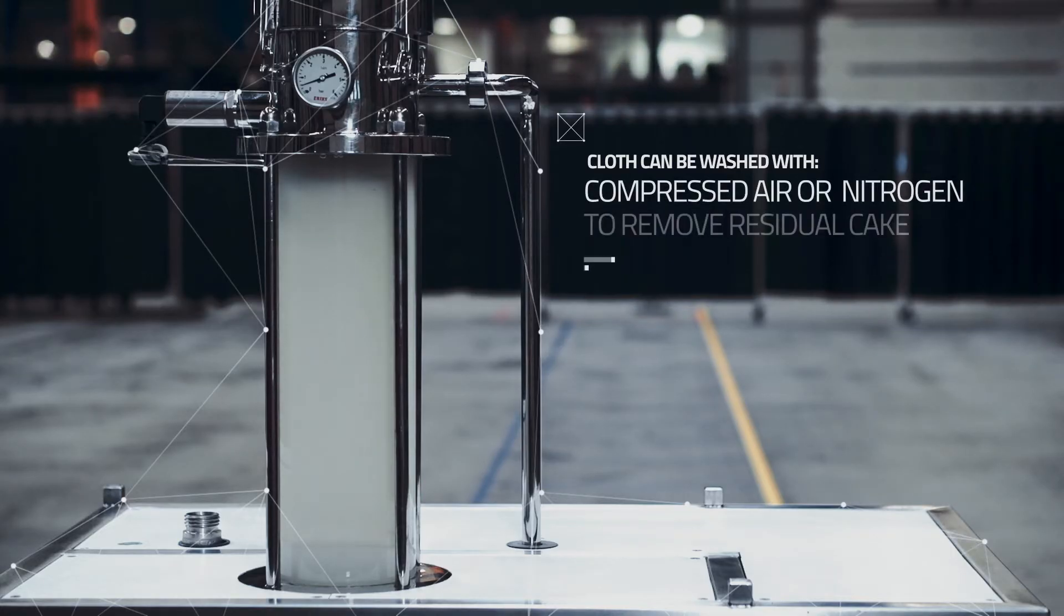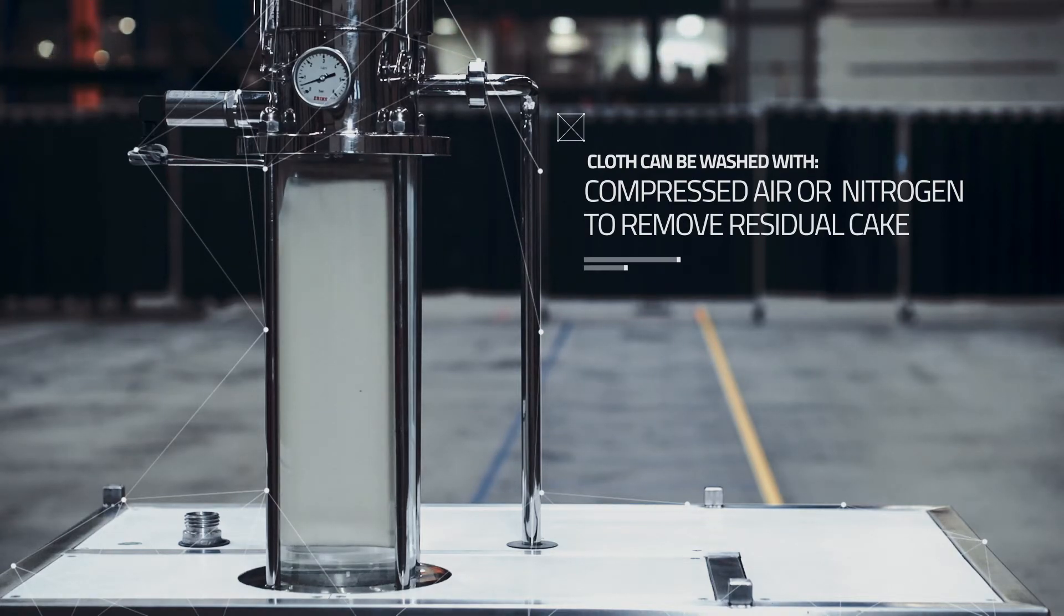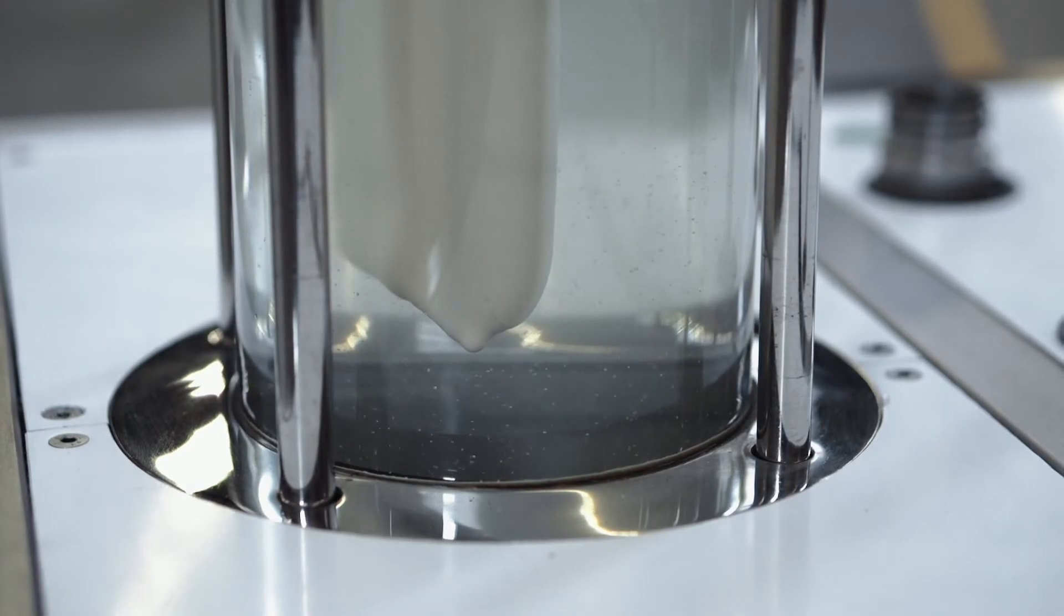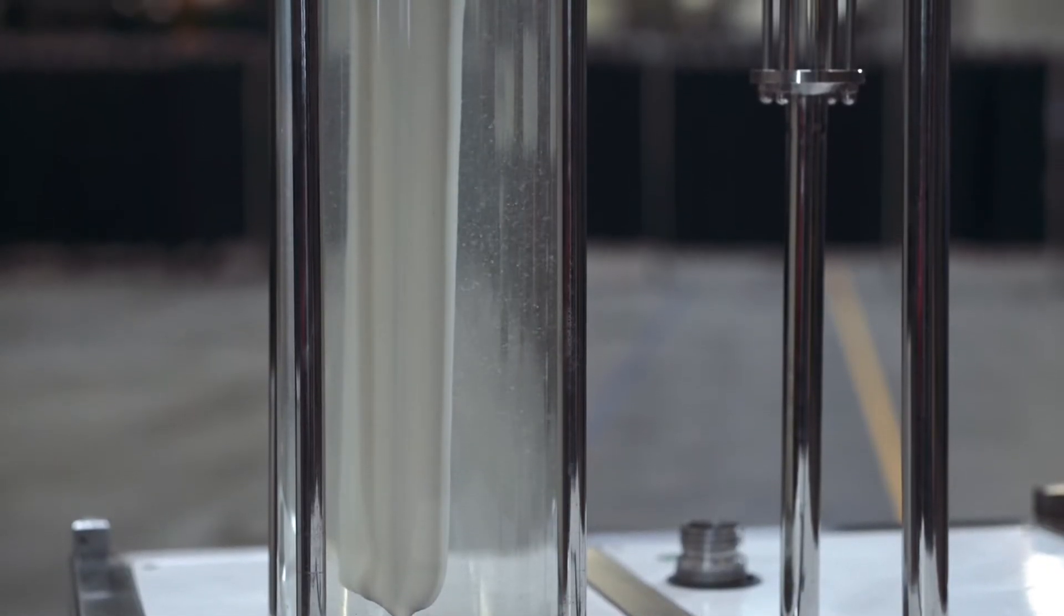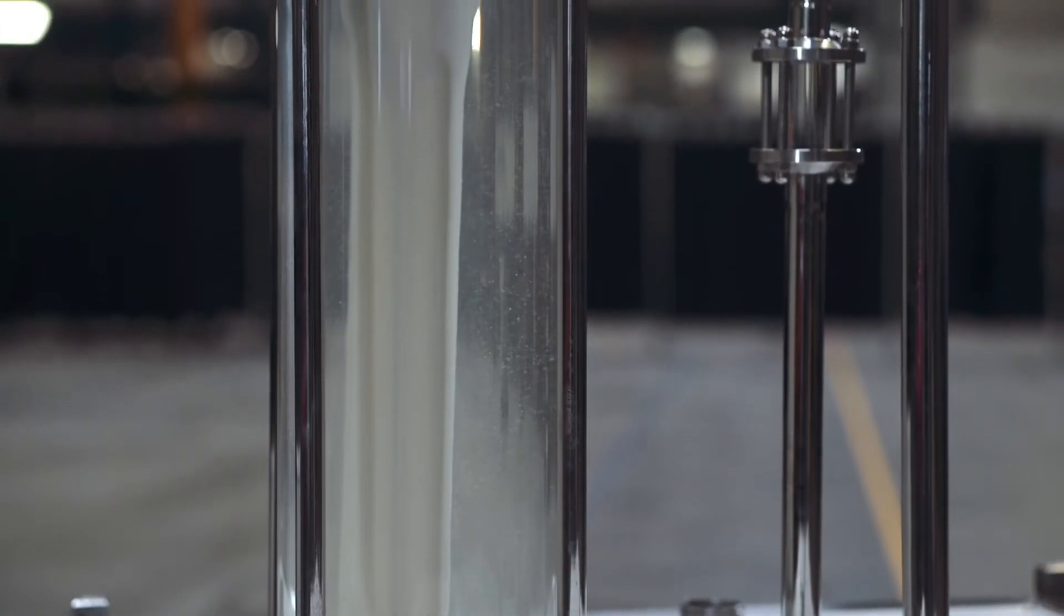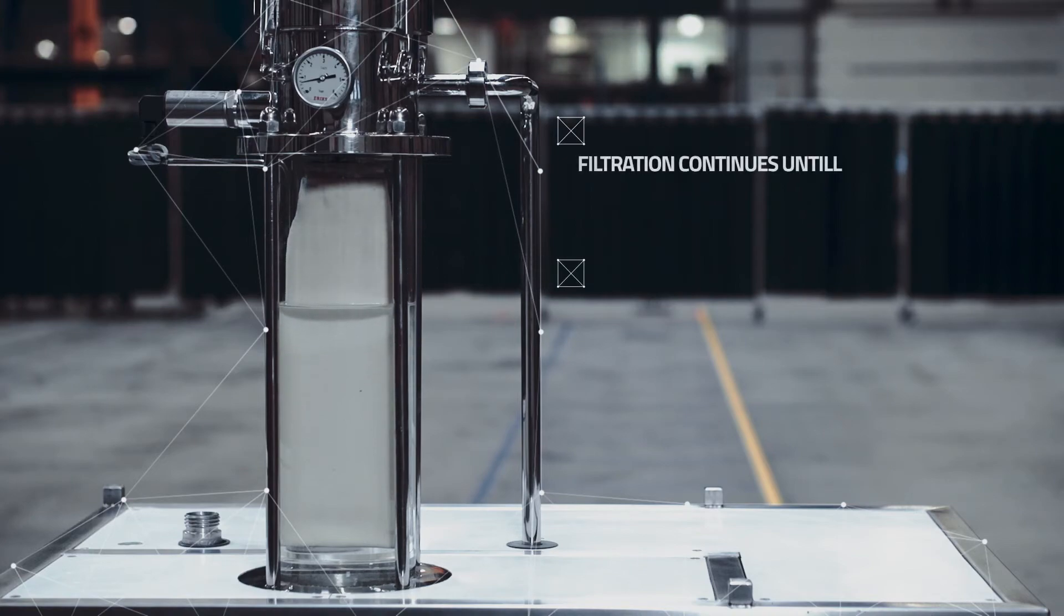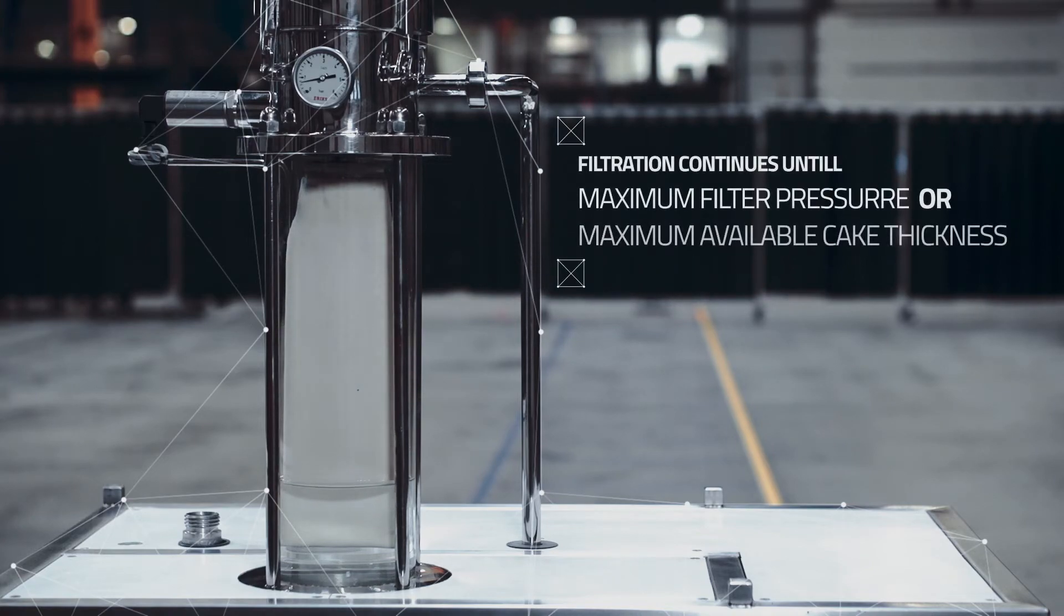Prior to filtration, the cloth can be washed with compressed air or nitrogen to remove residual cake of previous filtration runs. The filtration continues until the maximum filter pressure or the maximum allowable cake thickness is reached.